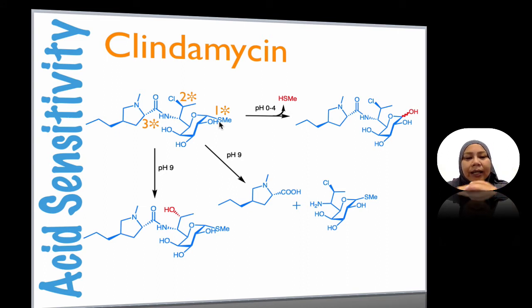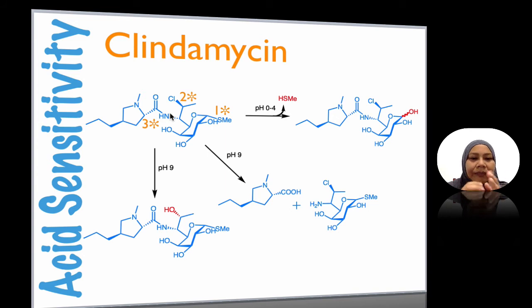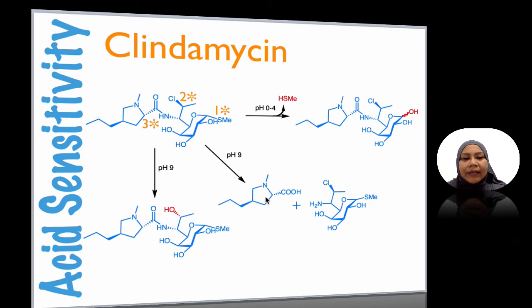At a higher alkaline pH of around pH 9, two things could happen. The first is that the amide bridge gets disconnected, leaving out the heterocycle — which, as you can see, is like an amino acid — and also releasing the sugar moiety.